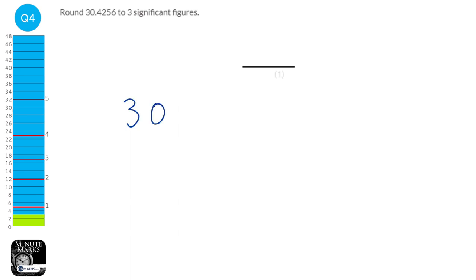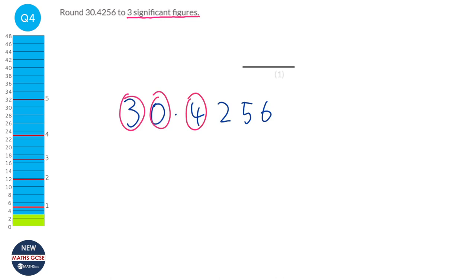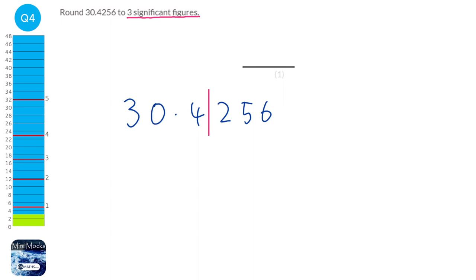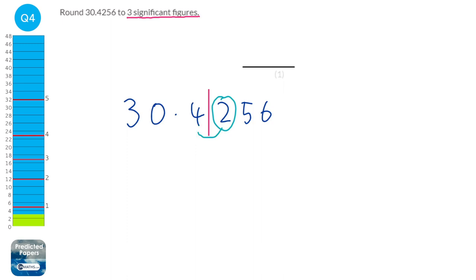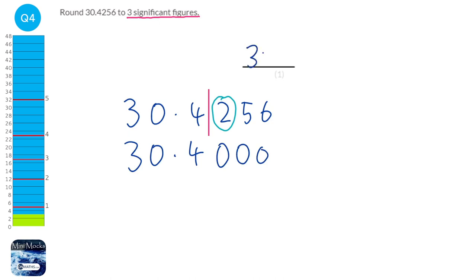I'm going to copy that number down a bit bigger so we can see what we're doing. We're asked to round it to 3 significant figures, which means 3 numbers from the left-hand side. Starting here: 1, 2, 3. The first number has to not be a zero, so if it was a decimal we would start counting as soon as it wasn't a zero. After the third digit we put a line down. All the numbers to the right are going to turn into zeros, but before they do, we look at the deciding number — if it is 5 or more, it pushes the previous digit up by 1; if it's less than 5, nothing happens. Because it's less than 5, all numbers to the right turn into zeros. With decimals, trailing zeros don't need to be written, so the answer is 30.4.